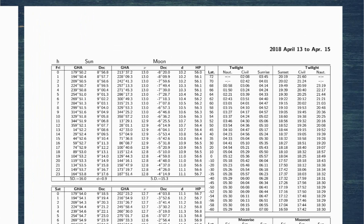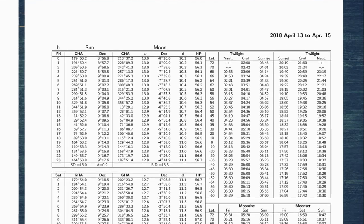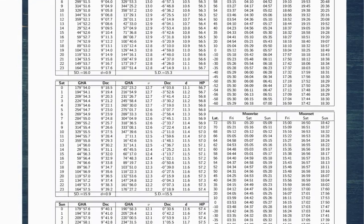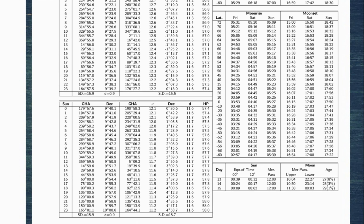Page 71 has the positions of the sun and the moon on each of the three days on the left-hand side, and on the right-hand side there are tables for twilight, sunrise, and sunset as well as moonrise and moonsets. Let's have a closer look at the sunrise and sunset table.